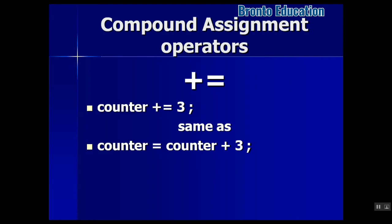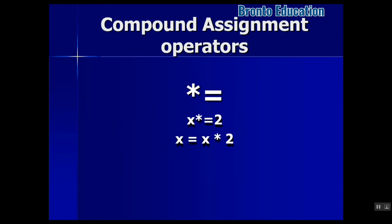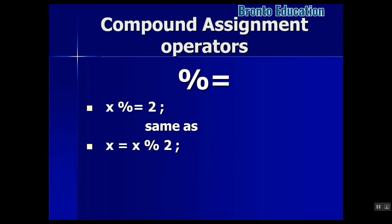For example, counter is 10, now it is 13. If counter was 100, it will become 103. There is no difference, except that counter plus-equals 3 will take less time to be executed. Instead of plus you can change it to minus and it will decrease, or multiply and it will multiply, or divide.